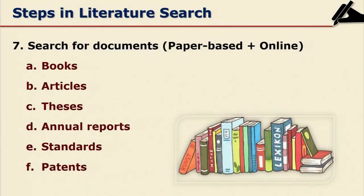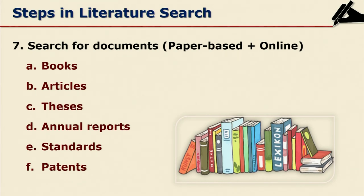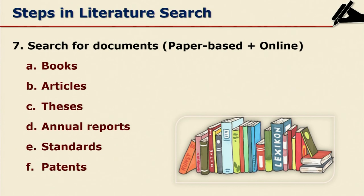The last step in literature search is actually getting hold of documents. After searching, documents can be paper-based or online. These include books, journal articles, theses, annual reports, standards, and patents. For example, standards such as BIS standards and time saver standards are very useful for researchers in ergonomics. Annual reports are important if you are studying a particular institution or university. Theses are primary resources and are equally important, so browsing through all these types of documents is essential.